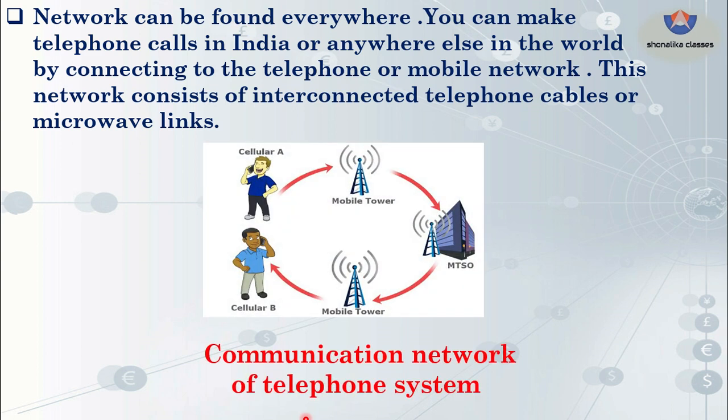See the picture. There are two cellulars — cellular A and cellular B. When cellular A connects to cellular B, it first connects to the nearest mobile tower, then the network connects to MTSO — that is the main server — then to cellular B's nearest mobile tower, and they connect. This picture stands for the communication network of the telephone system.